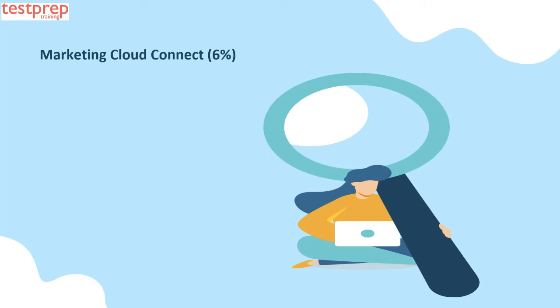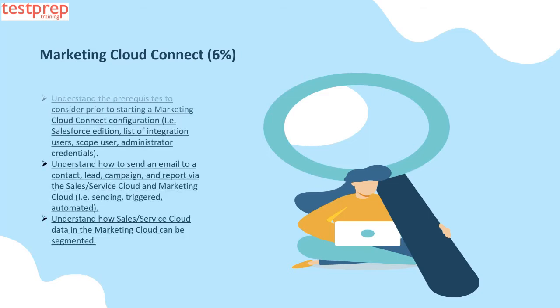Number two: Marketing Cloud Connect. It contains — first, understand the prerequisites to consider prior to starting a Marketing Cloud Connect configuration, including Salesforce edition, list of integration users, scope user, and administrator credentials. Second, understand how to send an email to a contact, lead, campaign, and report via the Sales or Service Cloud and Marketing Cloud, covering sending triggered and automated emails. Third, understand how Sales or Service Cloud data in Marketing Cloud can be segmented.